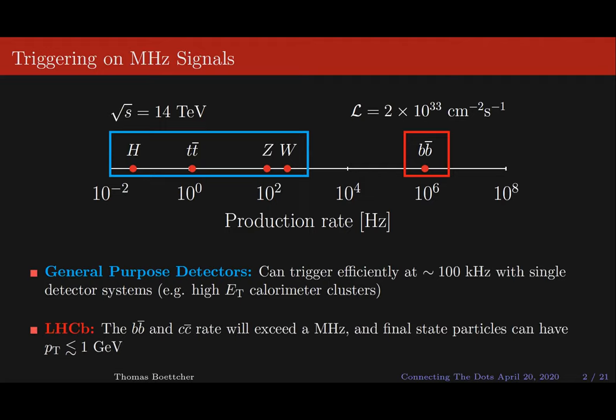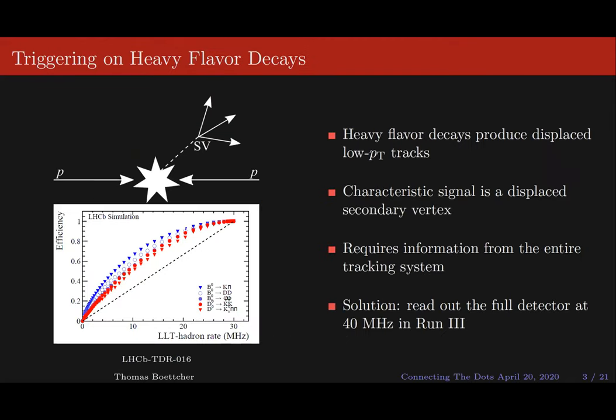But at LHCB, we're interested in heavy flavor decays — BB-bar production and CC-bar production. You can see on this plot that this will exceed one megahertz. Furthermore, the final state particles of these decays have relatively low energy, with PT of less than or about one GeV. So how do we trigger on these?